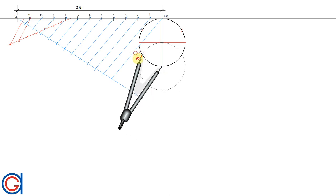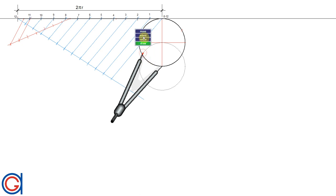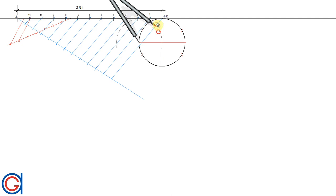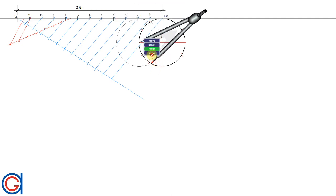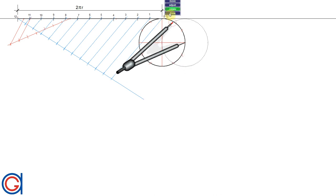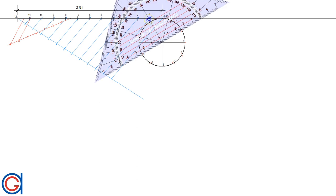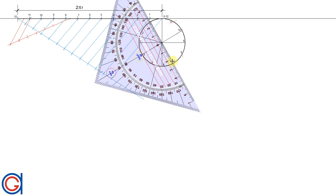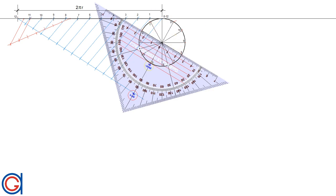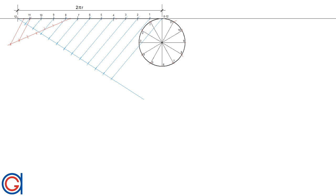Setting our compass on the bottom extremity of the vertical diameter we get another two points, describing arcs to the left and to the right. Setting the compass to the left extremity of the horizontal diameter, scribing arcs above and below, we get another two points, and finally on the right extremity we get another two points. These eight new points plus the four extremities divide our circle into 12 equal parts, which we name from 1 to 11. We then join the divisions through the center point forming 12 equal sectors, joining points 1 to 7, and 11 to 5 through the center.